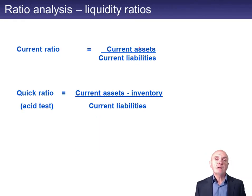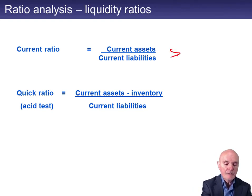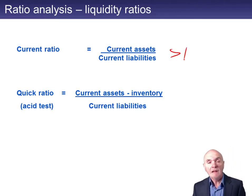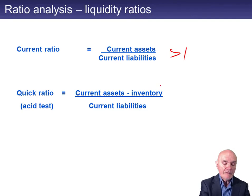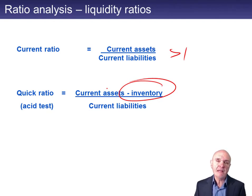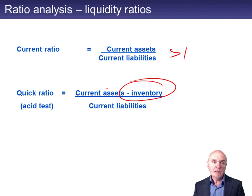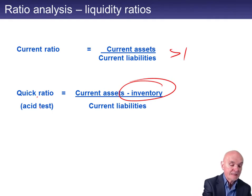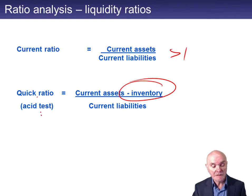Liquidity ratios: the current ratio — you'd like to see it at probably at least one. Similarly the quick ratio, which takes out inventory from current assets. This shows how easy it is to pay your current liabilities — wages or other current liabilities — out of your current assets: the cash, the receivables and the inventory. Because the inventory may take a long time to convert into cash, that's why the quick asset test ratio is sometimes used instead.